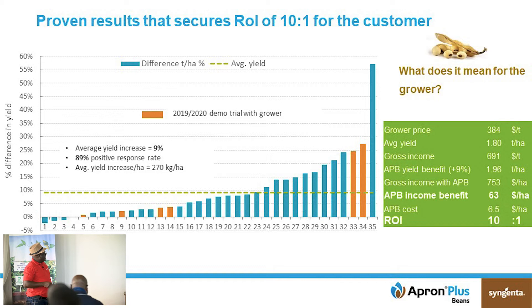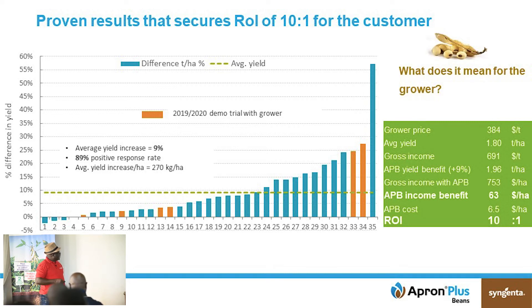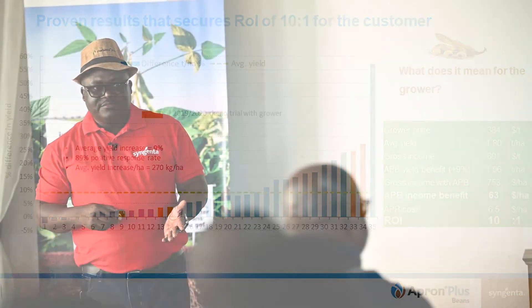With Apron Plus Beans giving 9% more than the control, they were getting $1.96 tons per hectare, with a gross income of $7.53. The income benefit with Apron Plus Beans is $63 per hectare. The cost is $6.50 per hectare, giving a return on investment of 10 to 1. Comparing with Zambia at 12 to 1, on average we are saying by using this product you will have a return on investment of between $8 going up to $12.